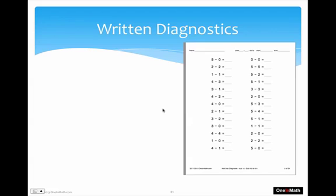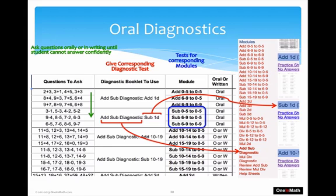This is more about the written diagnostics — here's what one page in a diagnostic could look like. Each page corresponds to a module. The first page would be about Sub 0–5 to 0–5, with problems like 3−1, 5−3, 4−2, and 5−2. The second page has slightly bigger numbers, Sub 6–9 to 0–5, with problems like 9−4 and 7−2. The last page would be Sub 6–9 to 6–9, with problems like 6−5, 8−6, or 9−7.